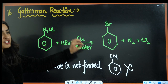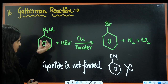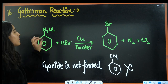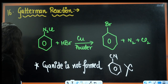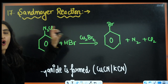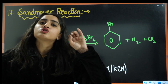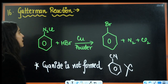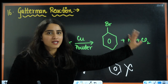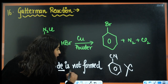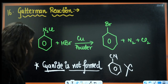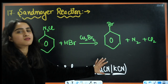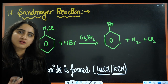Next is Gattermann reaction. Here the diazonium salt prepared from aniline at 0–5°C with HNO₂ is reacted with HBr and copper powder to give bromobenzene. The difference from Sandmeyer's reaction: in Sandmeyer's a copper salt is used (salt of copper — 'sand is salty'), while in Gattermann, copper powder is used. Cyanide is not formed in Gattermann, but it is formed in the Sandmeyer-type reaction using CuCN and KCN.